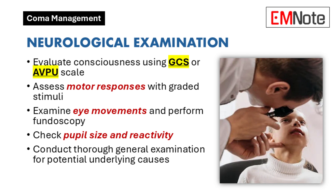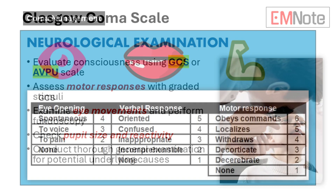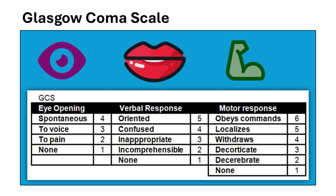A Glasgow Coma Scale score of 8 or less, or unresponsive on the AVPU Scale, indicates coma. A detailed neurological examination should be performed, including assessment of motor responses: assess for purposeful movements, withdrawal, flexion, or extension responses to graded stimuli.